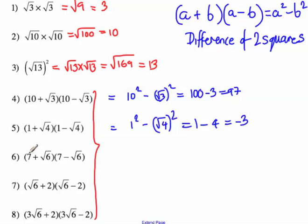Next question. First number squared is 7 squared, subtract root 6 squared. 7 squared is 49, root 6 squared is 6. 49 take away 6 is 43.